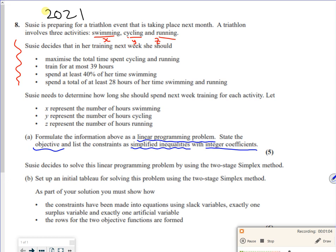So I want to maximize the total time spent cycling and running. So I want to maximize T for time. Cycling and running, so that's Y plus Z. There we go. So that's that one done.